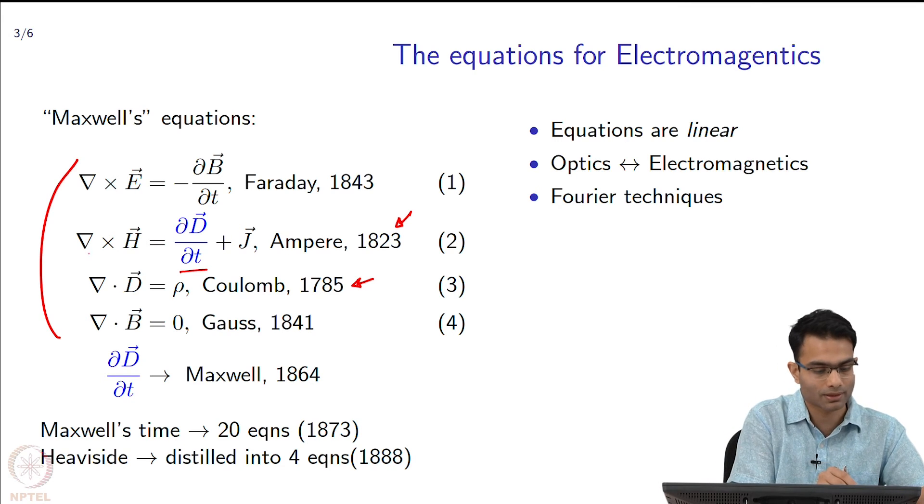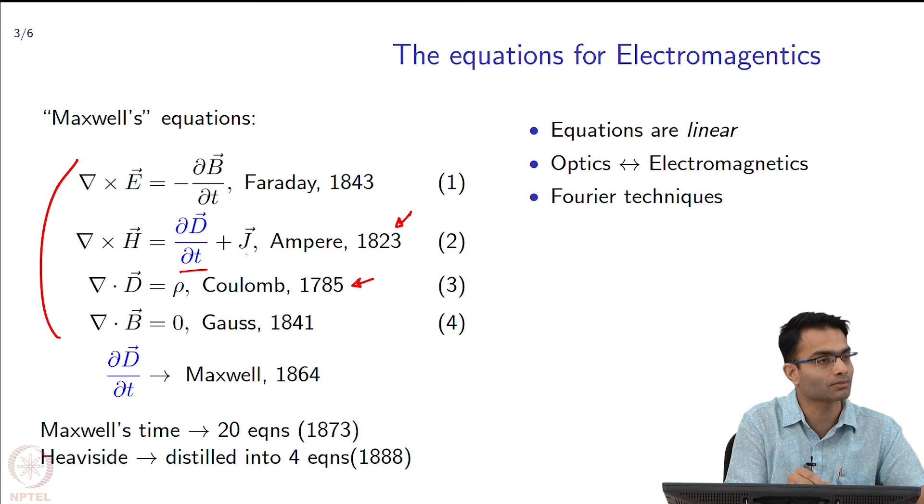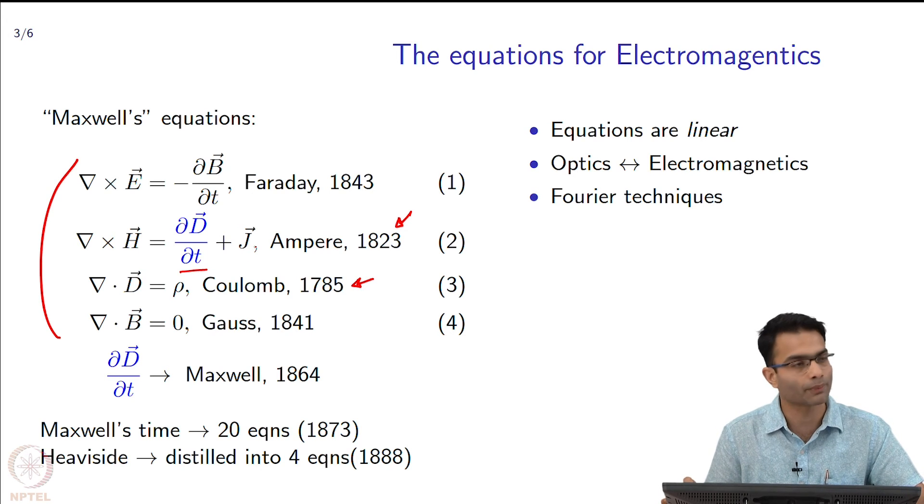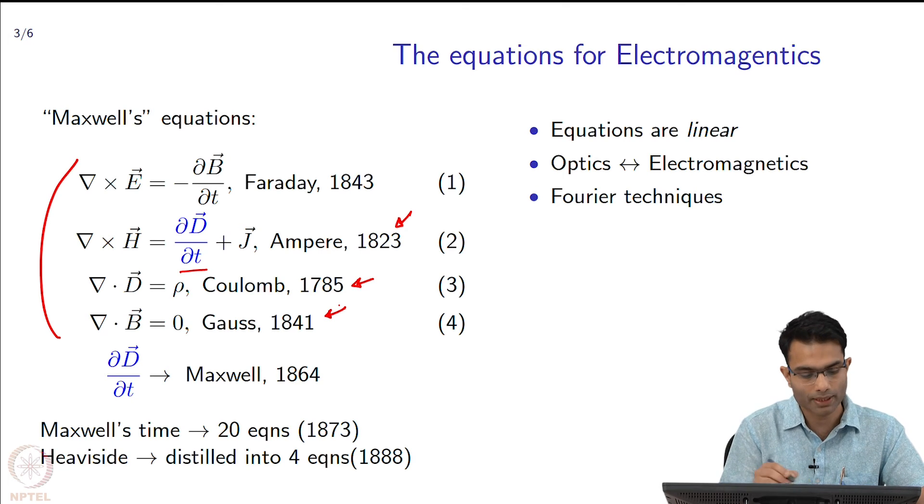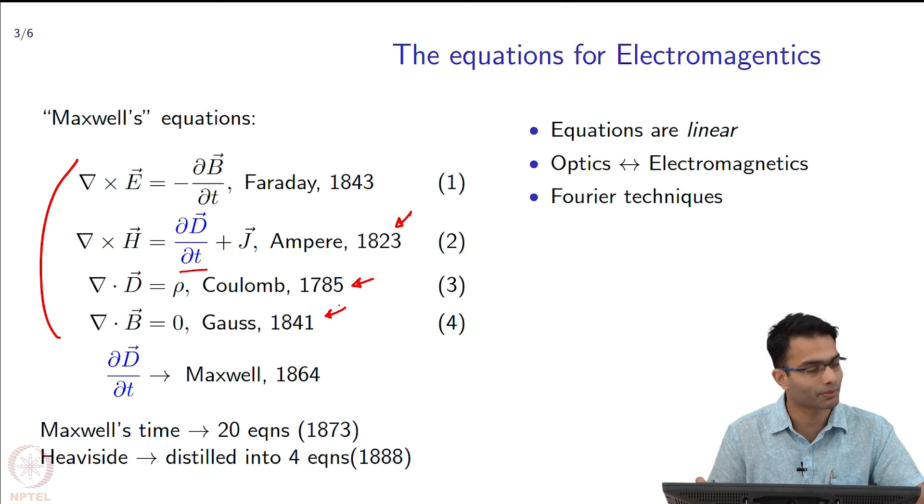Then comes along the work of Ampere without the displacement current term. Ampere had this del cross H and a J term, and that was Ampere's circuit law for 1823. Then you move forward - Gauss began to study magnetism. We had this del dot B equal to 0 equation.